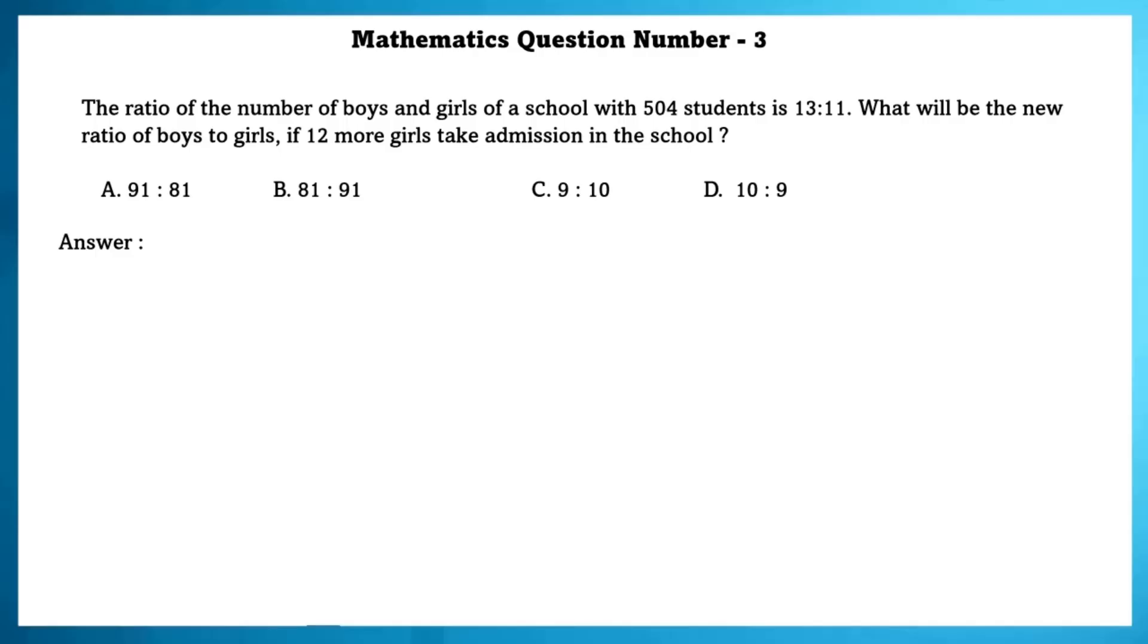Mathematics question number 3. The ratio of number of boys and girls of a school with 504 students is 13 is to 11. What will be the new ratio of boys to girls if 12 more girls take admission in the school?